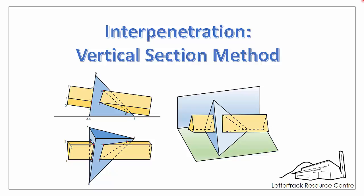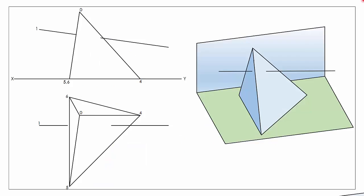Hello and welcome to our webcast series on the topic of interpenetration. In this video we're going to look at how to use the vertical sections method to locate points of interpenetration between two solids. We'll begin by looking at what happens with one solid — here we have a regular pyramid and a single line that's going to pierce through it. You can see there are going to be two points where our line pierces our pyramid.